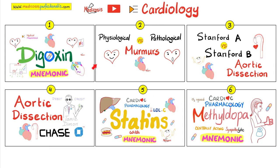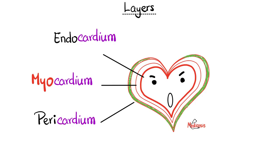Please watch my cardiology videos in order for maximum understanding and retention. Here's your lovely heart — we have three layers. On the inside, there's the endocardium; endo means inside, cardium means heart. Then we have the myocardium, the muscle layer made of cardiac muscle. Then we have the pericardium, the outermost layer. Peri means around — as in periosteum around bone, perichondrium around cartilage, and pericardium around the heart.